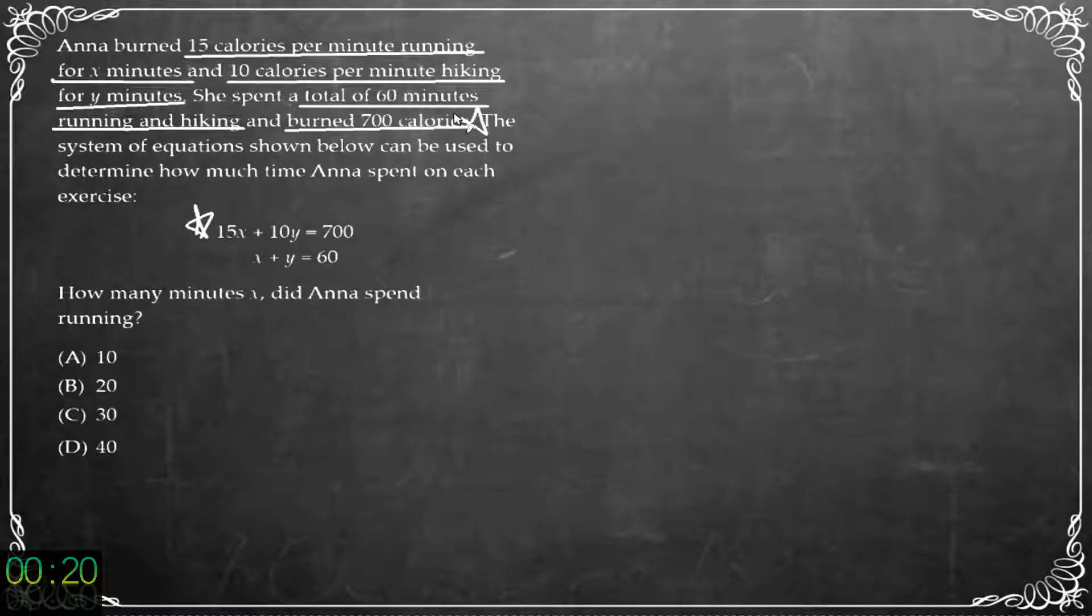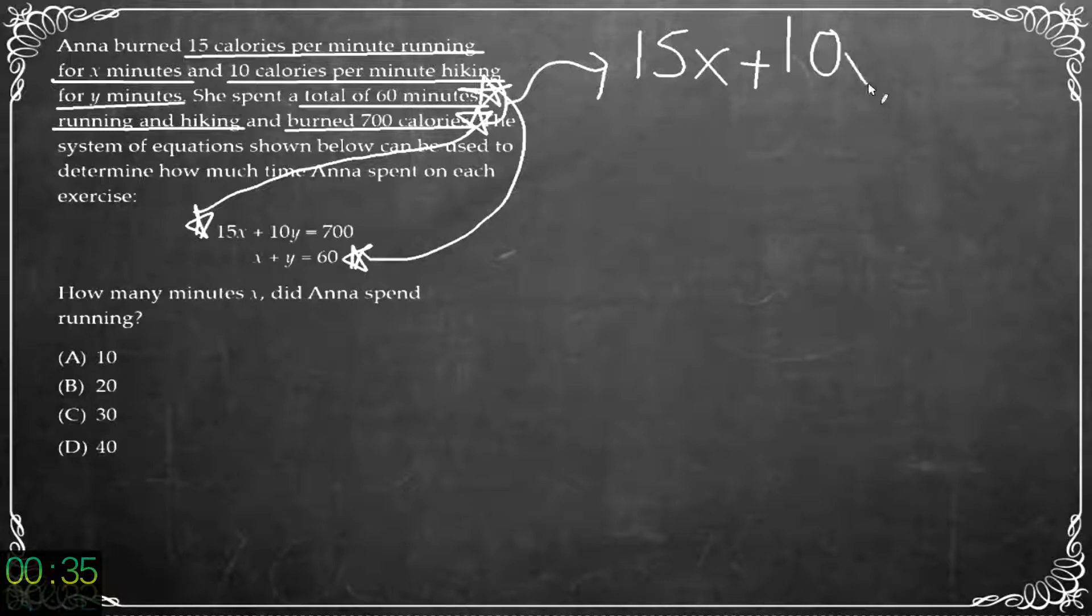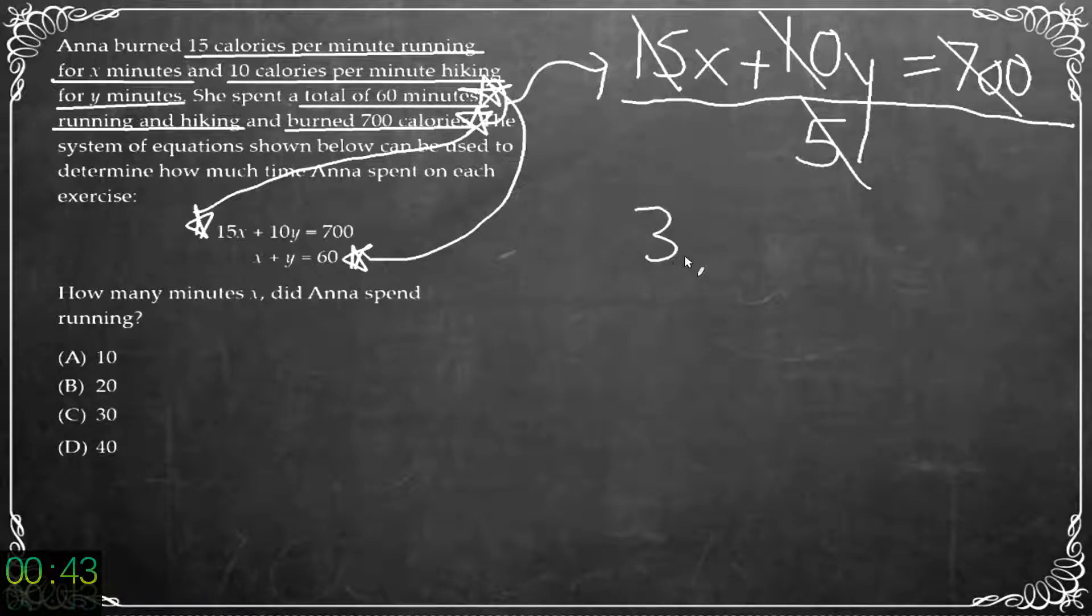Well that first equation looks like it has to do with the 700 calories and the second one has to do with the 60 minutes. So I'm going to go ahead and set these equations equal to each other but first it looks like that first equation could do with a little bit of simplification. So 15X plus 10Y equal to 700. If I divide both sides by 5 I should reduce it down to 3X plus 2Y is equal to 140.